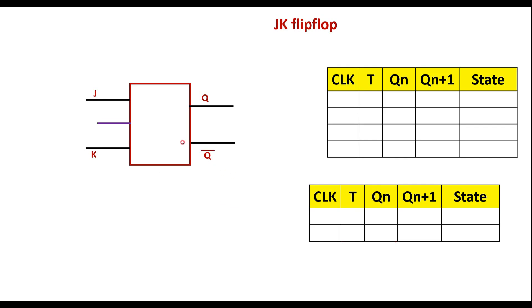Let me look at the block diagram. We know that in a JK flip-flop, J and K are the inputs, and Q and Q bar are the outputs. We can derive the T flip-flop from the JK flip-flop — if we short the J and K inputs, we get a single input, which is the T input. This becomes the T flip-flop.